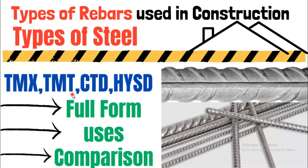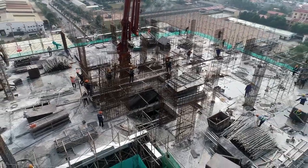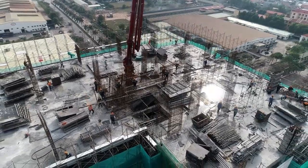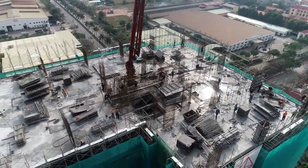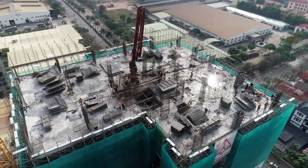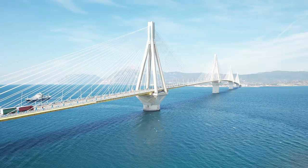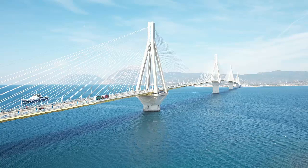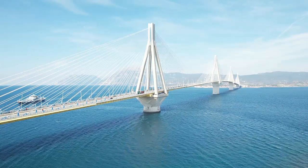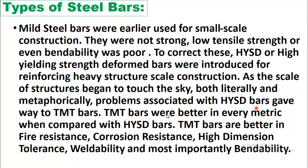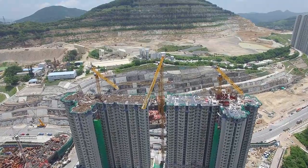Mild steel bars were earlier used for small-scale construction but had low tensile strength and poor bendability. To correct these issues, HYSD (high yielding strength deformed) bars were introduced for heavy structure construction. As structures grew larger, problems with HYSD bars led to the development of TMT bars, which were better in fire resistance, corrosion resistance, dimensional tolerance, weldability, and most importantly, bendability.